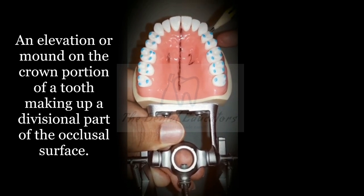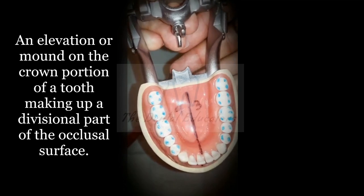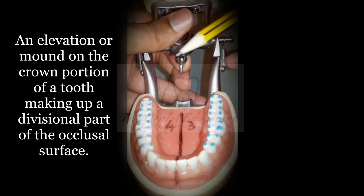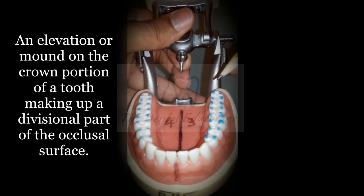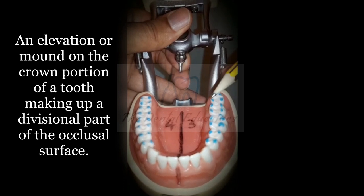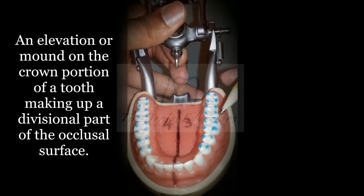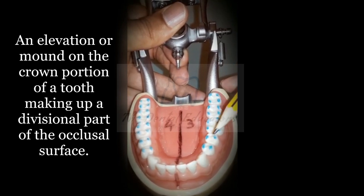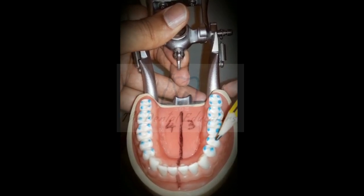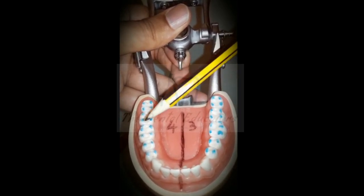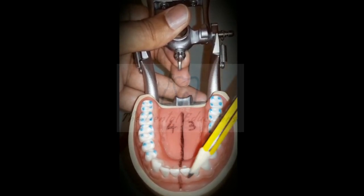The cusps seen in the first quadrant on the premolars and molars are similar to those in the second quadrant. In the mandibular arch, the blue marked areas represent the cusps on the premolars and molars. The third molar has four cusps, the mandibular first molar has five cusps, and each premolar has two cusps. Remember that cusps are always present in the posterior teeth.